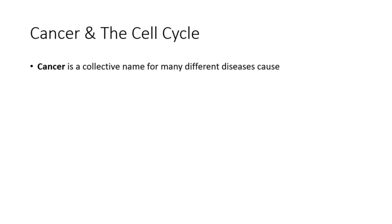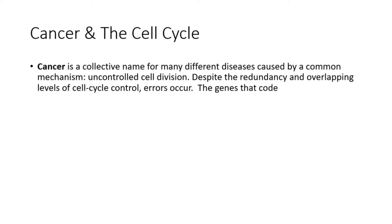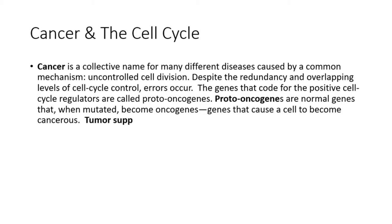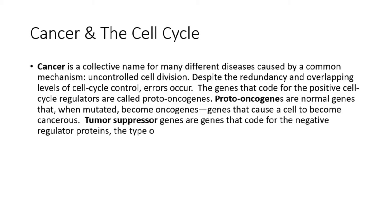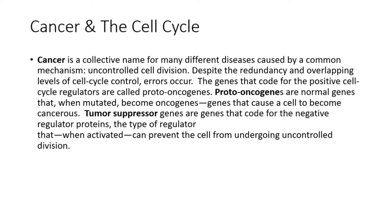Cancer is a collective name for many different diseases caused by a common mechanism: uncontrolled cell division. Despite the redundancy and overlapping levels of cell cycle control, errors occur. The genes that code for the positive cell cycle regulators are called proto-oncogenes. Proto-oncogenes are normal genes that, when mutated, become oncogenes — genes that cause a cell to become cancerous. Tumor suppressor genes are genes that code for the negative regulator proteins, the type of regulator that, when activated, can prevent the cell from undergoing uncontrolled division.